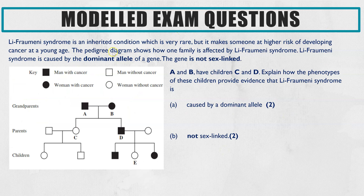Next, Lee-Fraumeni Syndrome is an inherited condition which makes someone at higher risk of developing cancer at a young age. The pedigree diagram shows how one family is affected, and we're told it's caused by a dominant allele and is not sex-linked. In this example, they've given you exactly which individuals to focus on: A and B have children C and D. You have to explain how the phenotypes of C and D provide evidence that Lee-Fraumeni Syndrome is caused by a dominant allele and is not sex-linked.